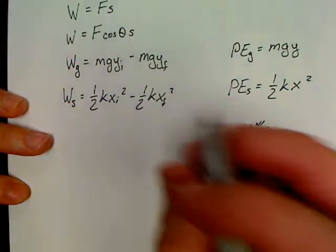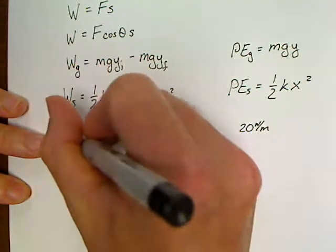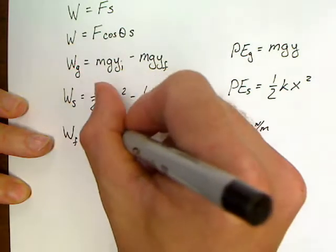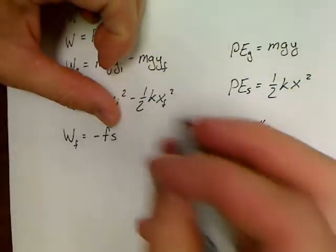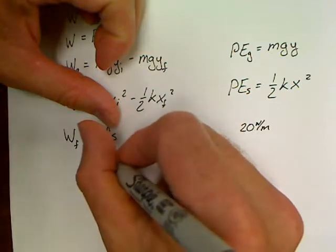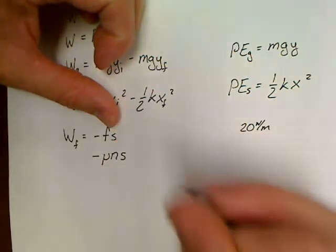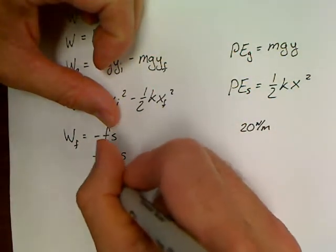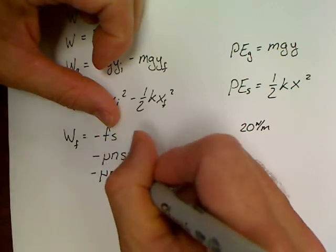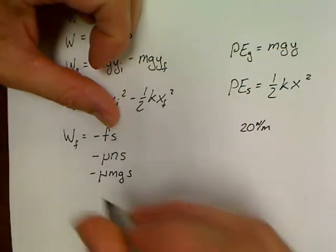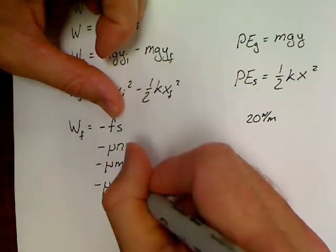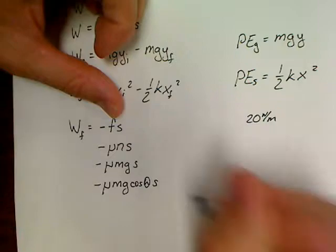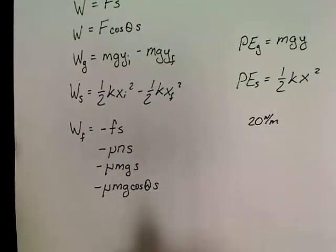The only other problem that really sticks out: if we've got friction, we'll write negative little f·S, and if you're working a problem with friction at any time, that could be rewritten as negative μ·N·S, which could also be written as negative μ·m·g·S if you're on flat ground. And if you're on the hillside you could rewrite as negative μ·m·g·cosθ·S.